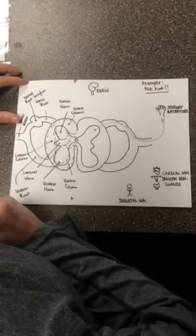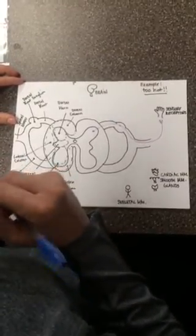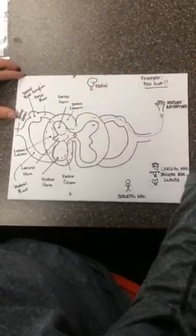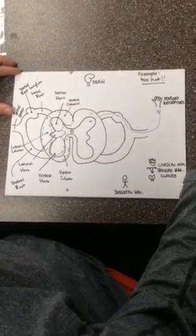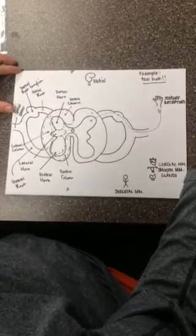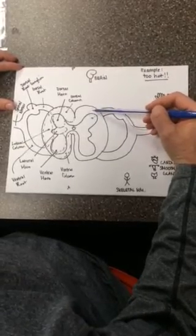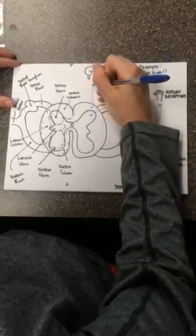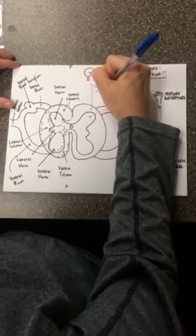It's going to arrive in the dorsal horn of the gray matter. From the dorsal horn, it's actually going to pop over to the dorsal column. The columns in the white matter of the spinal cord have ascending and descending tracts, and that's what allows the messages to actually get up to the brain. So from the dorsal horn, information pops over to the dorsal column, where it will travel up to the brain via the sensory ascending tracts.